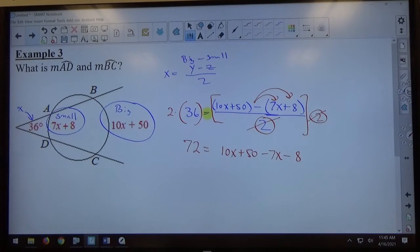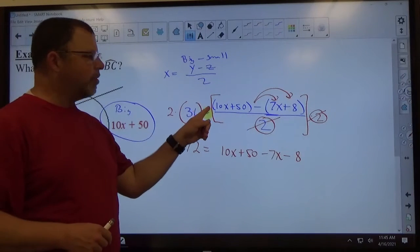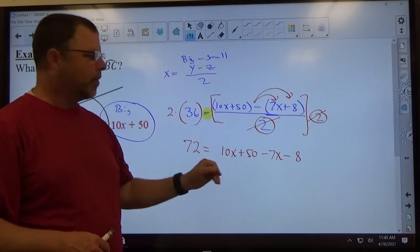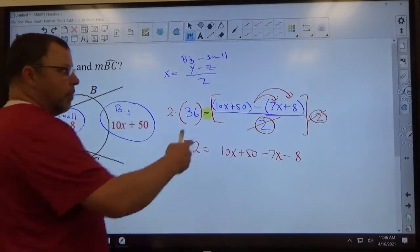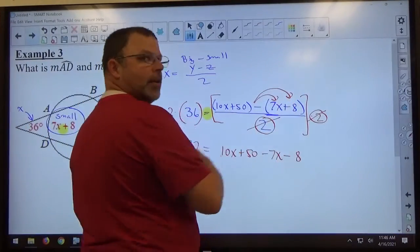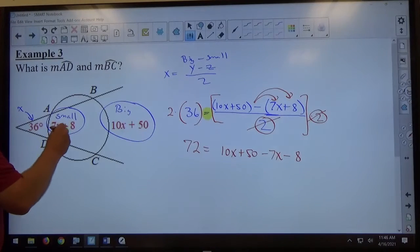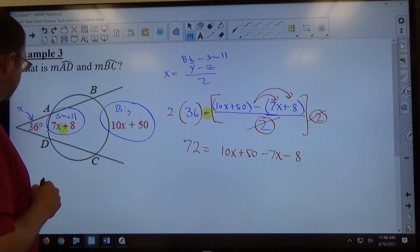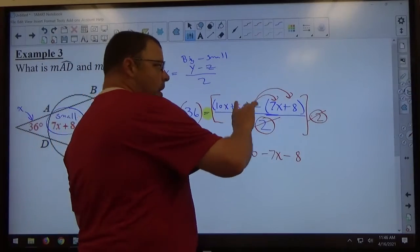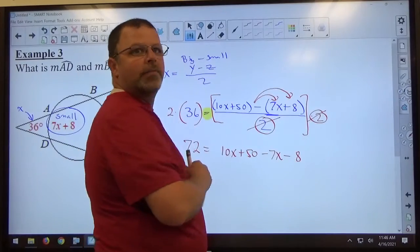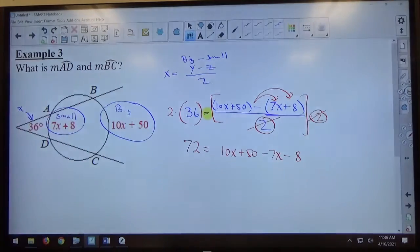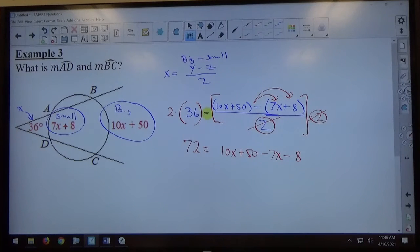The first set of parentheses around the 10x plus 50, nothing's happening to that parentheses, right? There's nothing add and subtract and multiply or divided by it, so nothing happens to it. It's plus 8 here, right? And we're subtracting 8, so minus 8. So this minus sign minus this thing, right? So minus 7x and minus 8, so minus minus happens on that. So again, be careful that parentheses are needed and that when they're needed, they're dealt with properly with the distributive property.